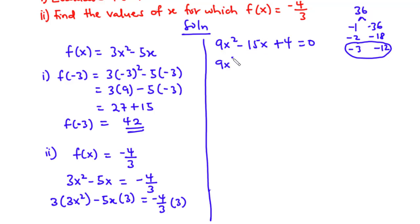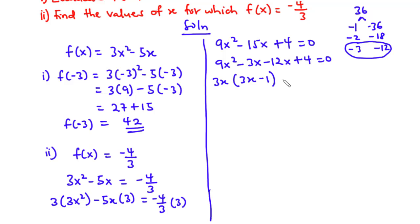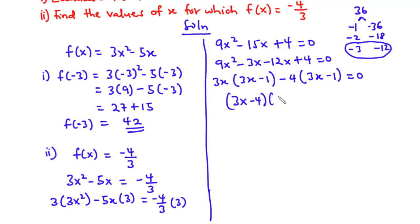So we rewrite the middle term: 9x squared minus 3x minus 12x plus 4 equals 0. We factor out 3x from the first pair to get 3x(3x minus 1), and factor out negative 4 from the second pair to get negative 4(3x minus 1). This gives us (3x minus 4)(3x minus 1) equals 0.